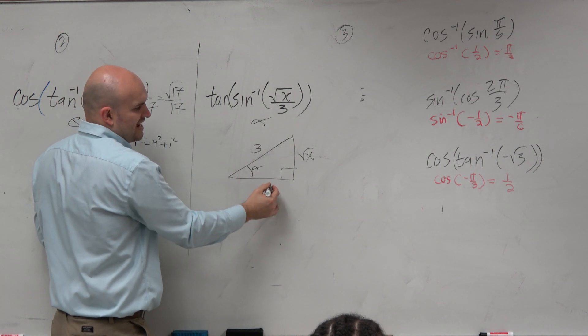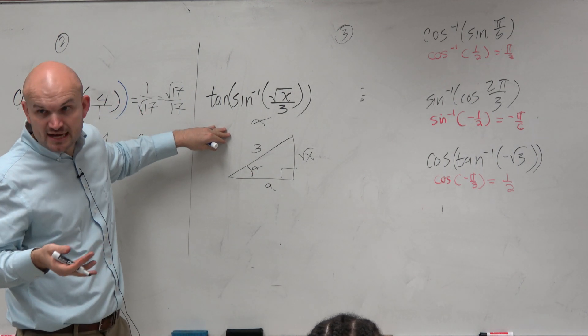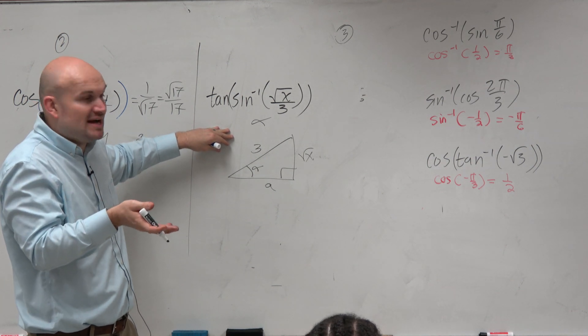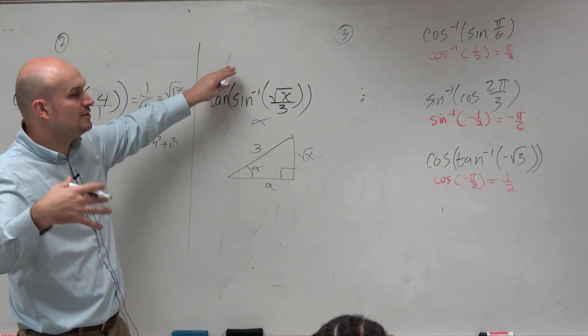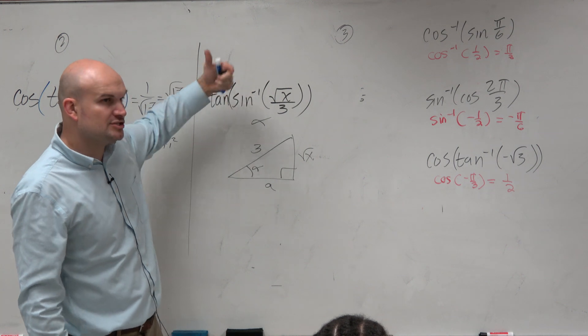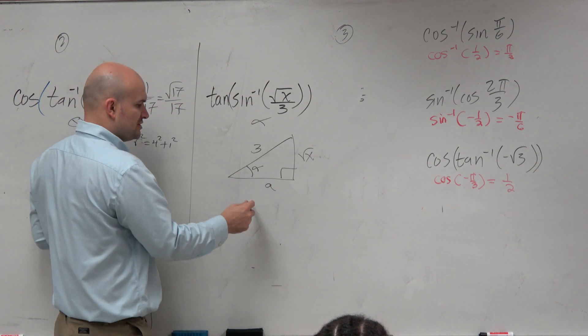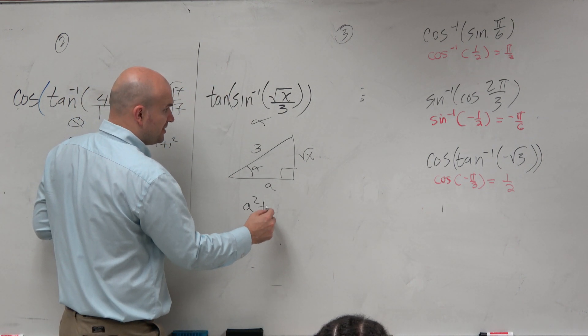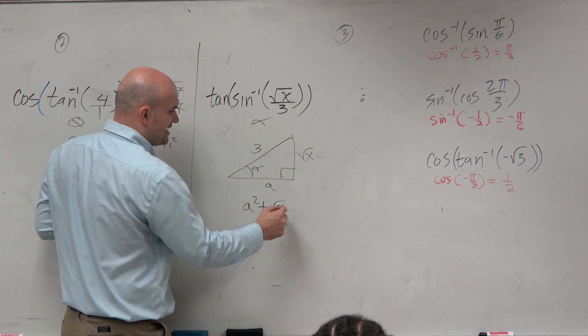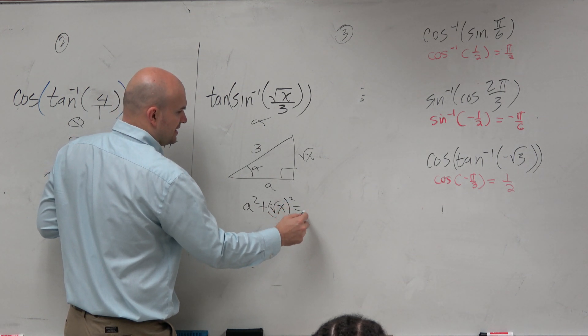So let's just call this A for whatever, because typically the answer choices on a multiple choice would be all in terms of X, or I would say, evaluate this expression in terms of X. So what we're going to do is use Pythagorean theorem again. A squared plus square root of X squared equals 3 squared.